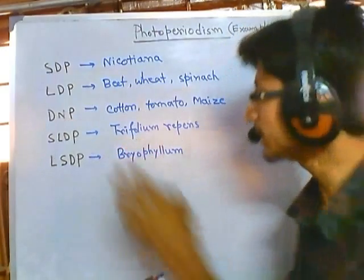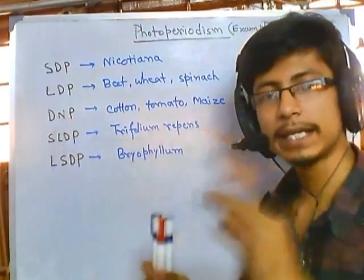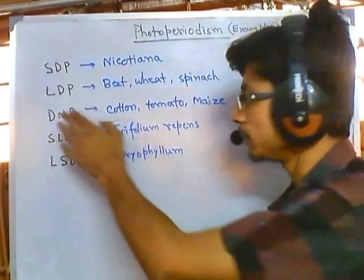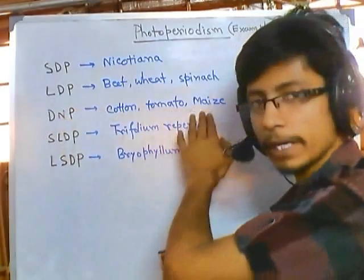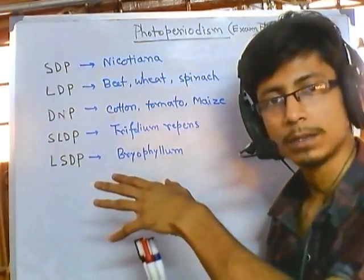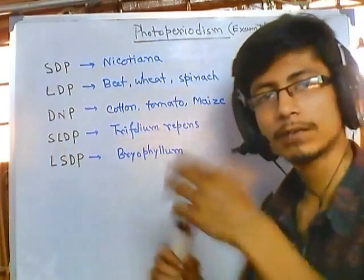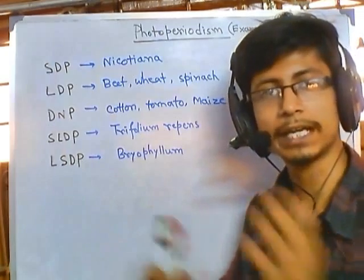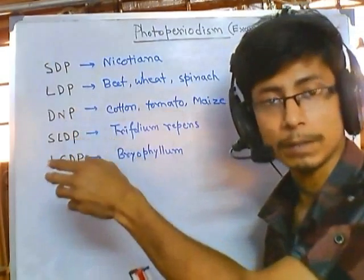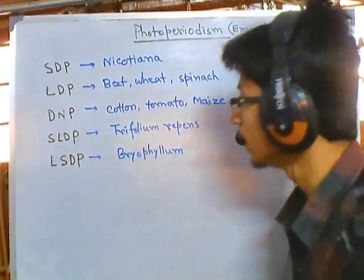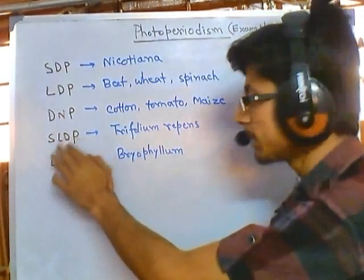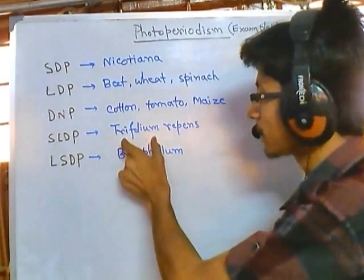Day neutral plants (DNP) are plants where day length has no effect on flowering. Examples include cotton, tomato, and maize. Whether it is 8, 10, or 14 hours of daylight, there is no effect on the flowering of these plants.